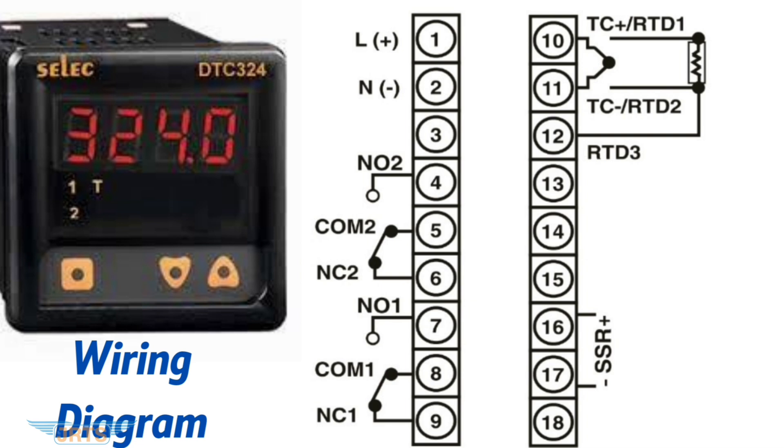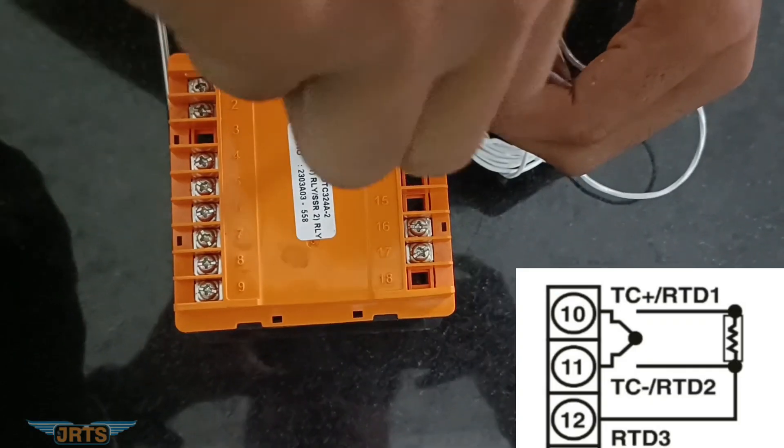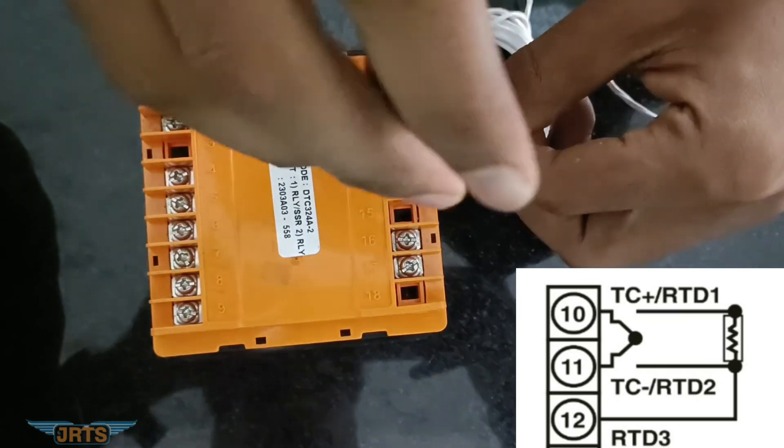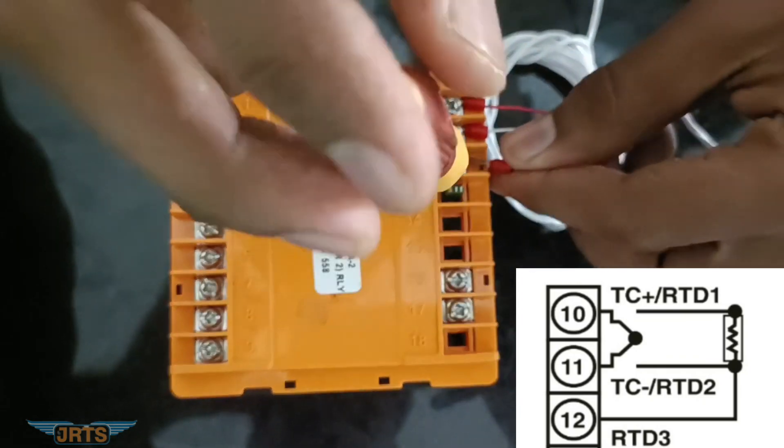12 for RTD input and remaining 4, 5, 6, 7, 8, 9 for relay. Now we can connect RTD sensor to the temperature controller. The pin number is 10, 11 and 12.